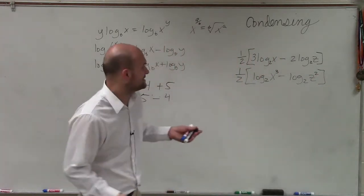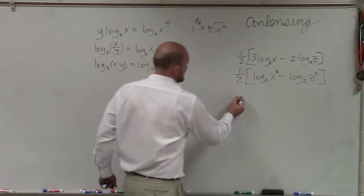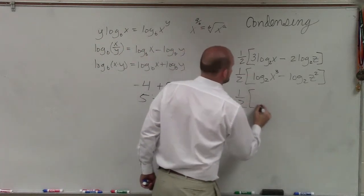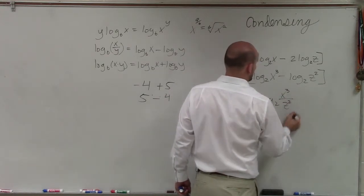So now I see that I have the difference of two logarithms with the same base, so I'm going to rewrite that as the quotient. So it's 1 half times log base 2 of x cubed divided by z squared.